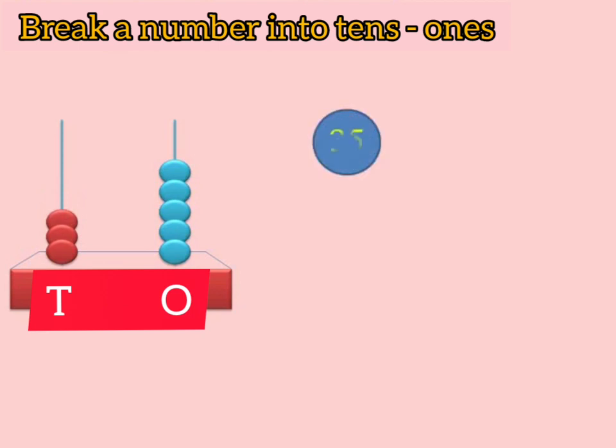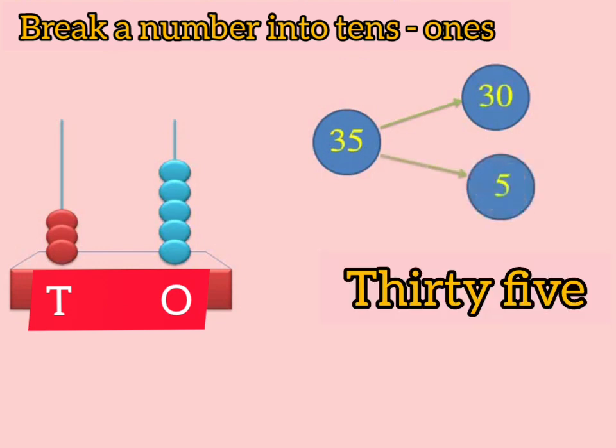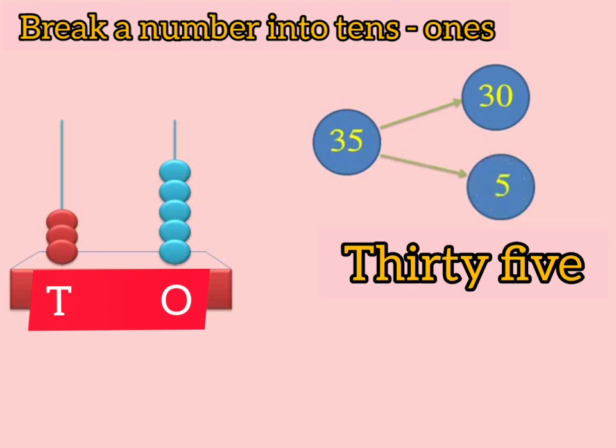In number 35, there are 3 tens. That means 30. And in number 35, we have 5 ones. That is 5. So the number is 35, which has 3 tens and 5 ones.